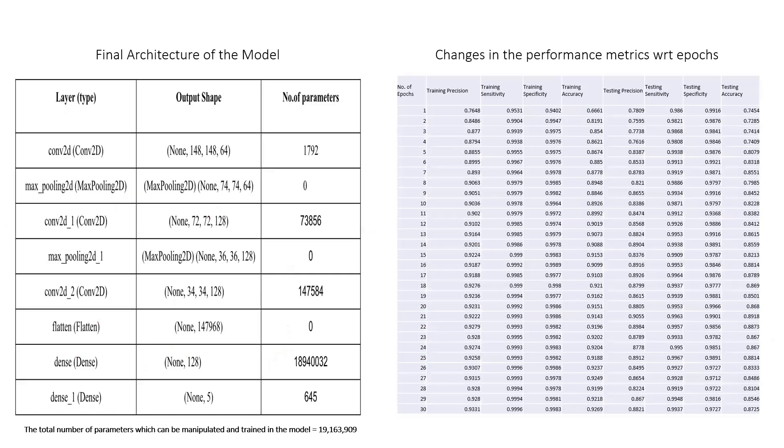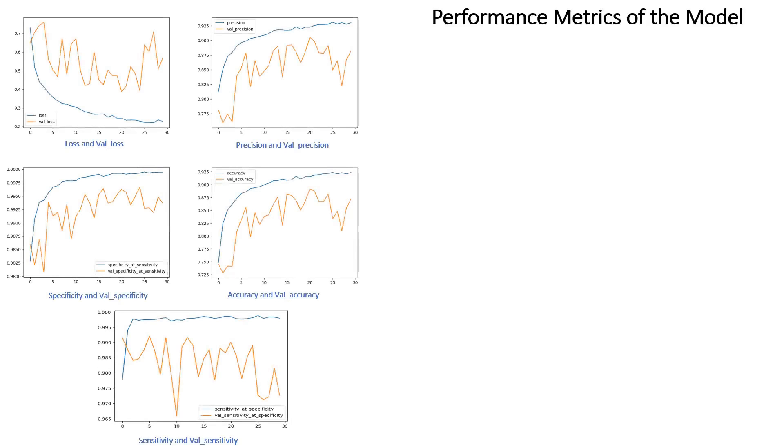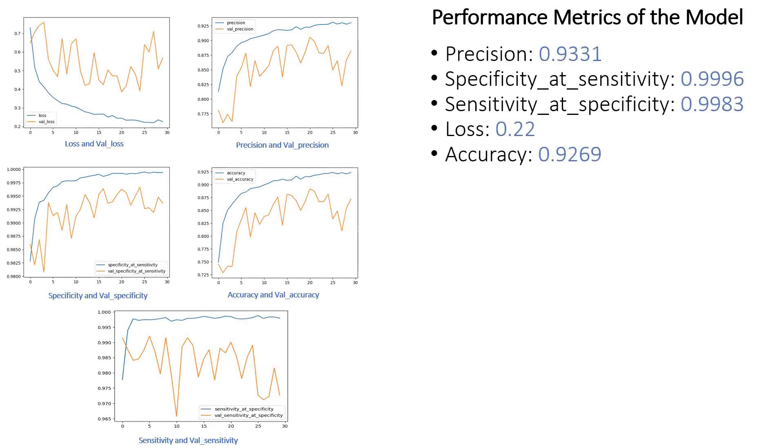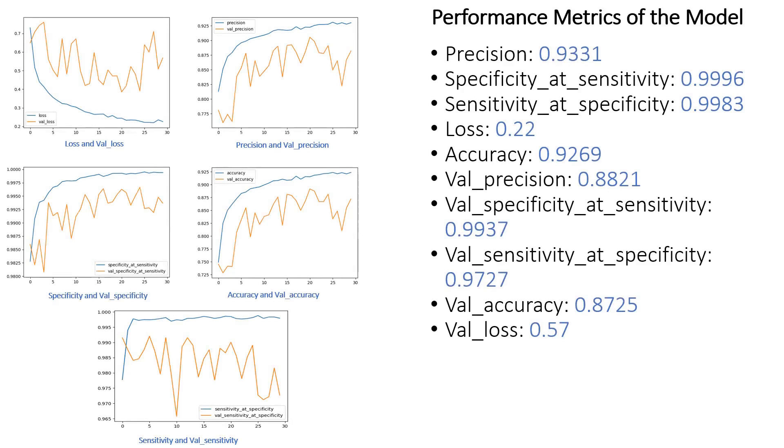After amalgamating the different layers of the CNN model, we get a total number of parameters that can be used to train the model: 19,163,909. In the next table, we see the dynamics of the performance metrics with respect to epochs. Coming to the next slide, we see the graphical representation of the performance metrics. From the graphs, it is evident that the training performance metrics show a bolstering upward trend with respect to epochs, while the performance metrics of the testing data show an upward trend with occasional dips, describing healthy learning of the data.